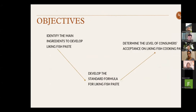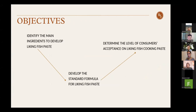There are three objectives for our project. The first is to identify the main ingredients to develop a leaking fish paste. The second is to develop a standard formula for making a real product of leaking fish paste. The last is to determine the level of consumer acceptance of the leaking fish cooking paste.